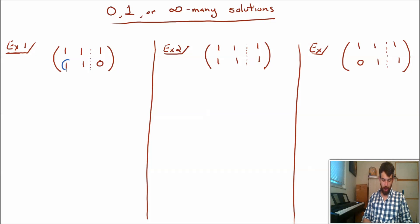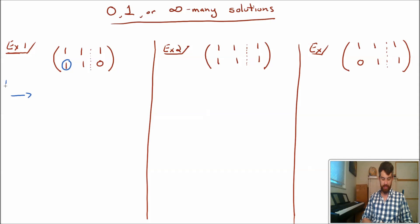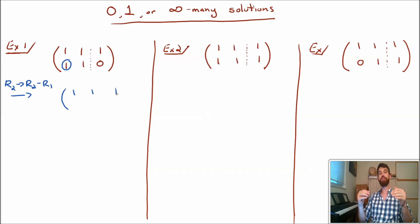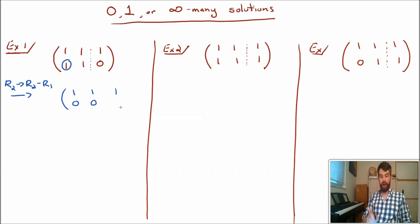Our first goal is to put a 0 in the lower-left position. We have a leading one on the top and we want a 0 underneath it — that's our ideal upper triangular form. To do that, I'll replace the second row with the second row minus the first row. That doesn't change the first row at all. Then: 1 minus 1 is 0, 1 minus 1 is 0, and 0 minus 1 is minus 1.